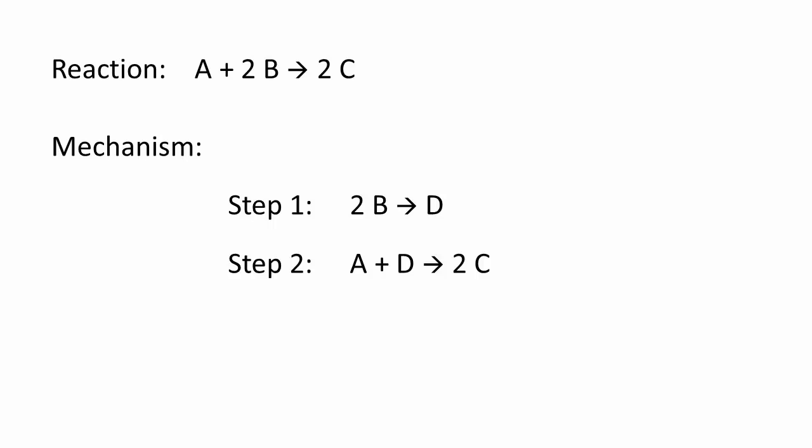We can never absolutely prove that we have the correct reaction mechanism. We can only say that it is consistent with every experimental observation. As soon as we find one inconsistency, we must modify our proposed reaction mechanism to account for this inconsistency.